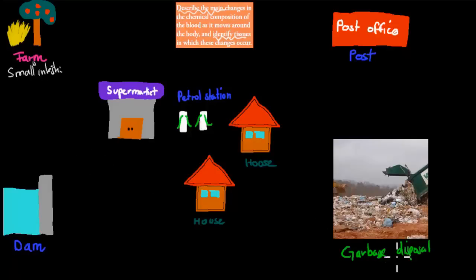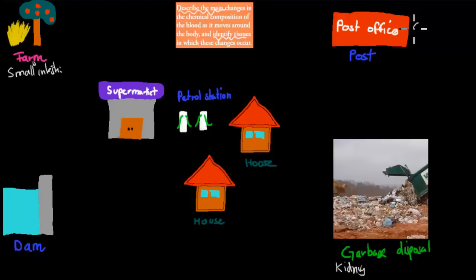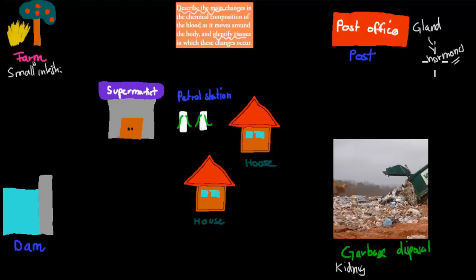We also have garbage disposal — obviously we all produce garbage and have to get rid of it. Garbage disposal can be compared to the kidneys, because the kidneys help us filter out all the bad stuff and get rid of waste. And we also have a post office, which delivers messages — that can be compared to our glands, because they produce hormones. For example, aldosterone tells cells to reabsorb salt, and ADH reabsorbs water. These hormones tell cells what to do — that's like the post office.